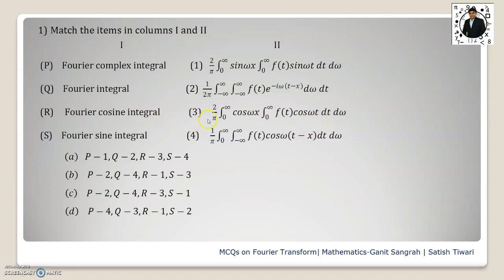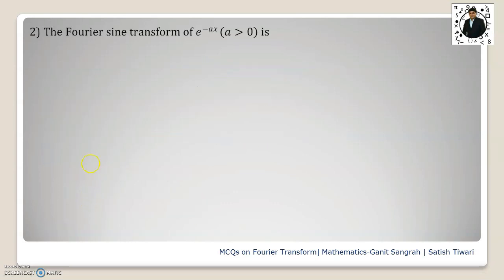So R is matching to 3. Option c is correct here, and as well as the Fourier sine integral will be given by formula number 1 which is correct here. So option c is correct for this particular MCQ. Now moving to the next question.